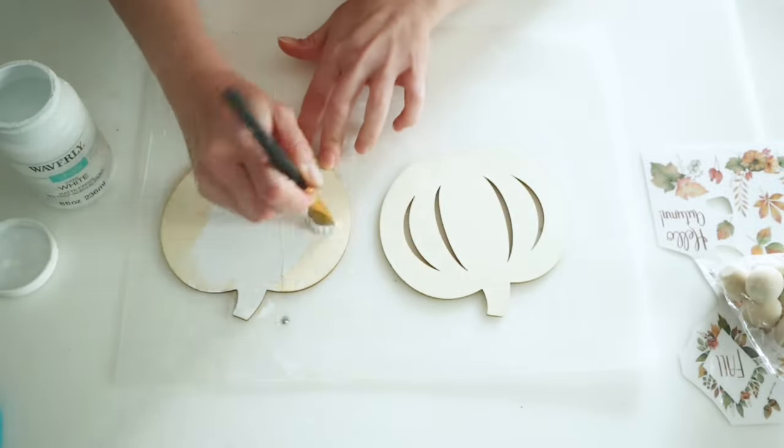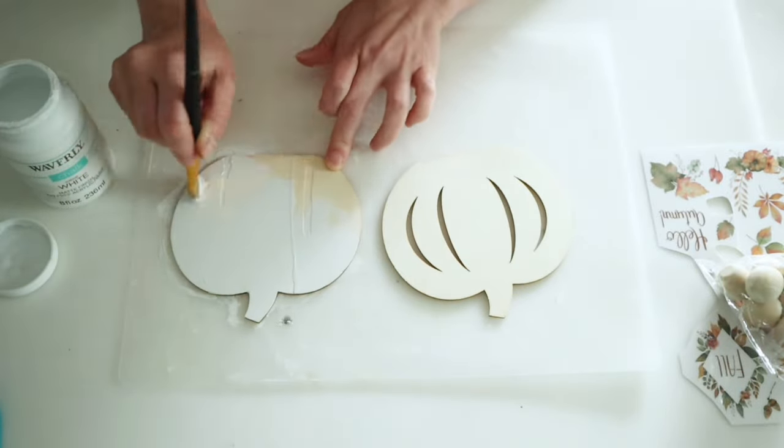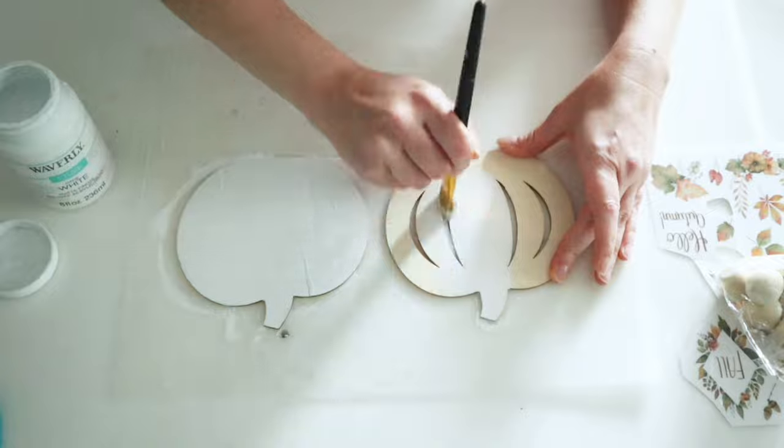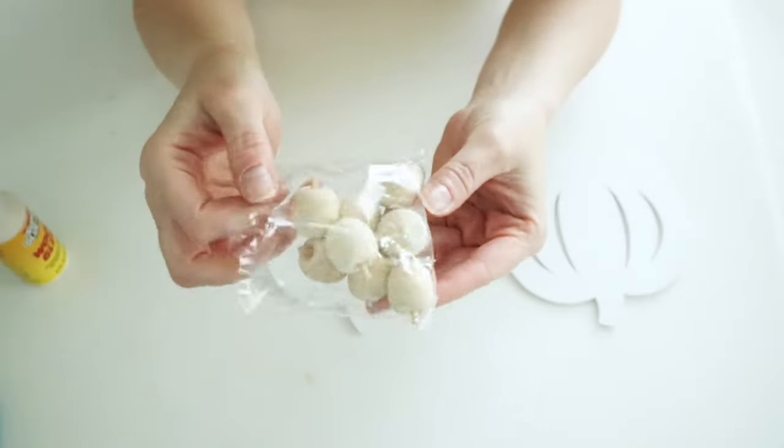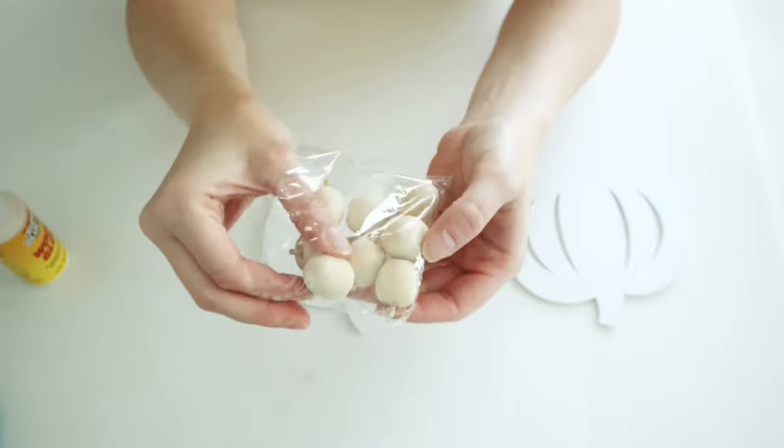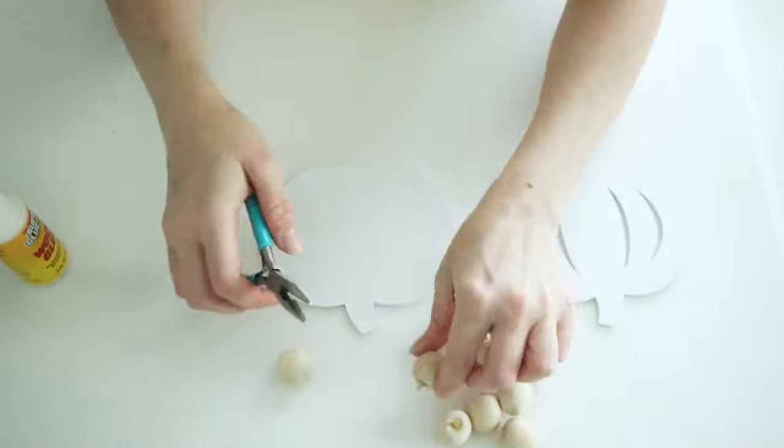Now you can go ahead and paint or stain this whatever color you want, but I am painting it white because I do want to use some of those Dollar Tree rub-ons for this project as well. I also picked up some of these little wood pumpkins from Dollar Tree for this project and I'm just going to go ahead and remove all of the little stems.